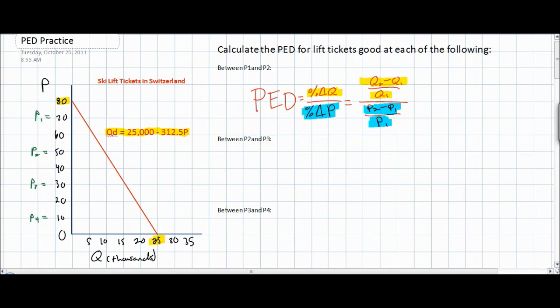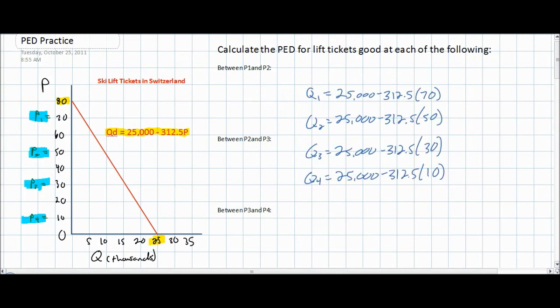Looking at our graph here, we've identified four prices: 70 francs, 50 francs, 30 francs, and 10 francs. Before we can calculate PED, the first thing we have to do is determine the quantities that correspond with each of these prices. To do that we'll use our demand equation and plug the four different prices into it to derive Q1, Q2, Q3, and Q4. Here we've plugged the four different prices into our demand equation and solved for the quantities demanded at each of these prices.